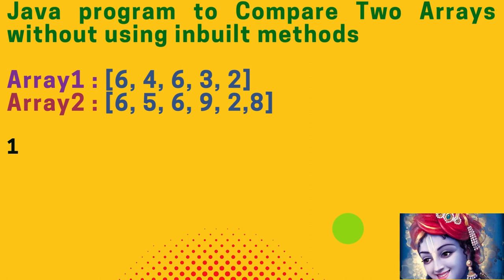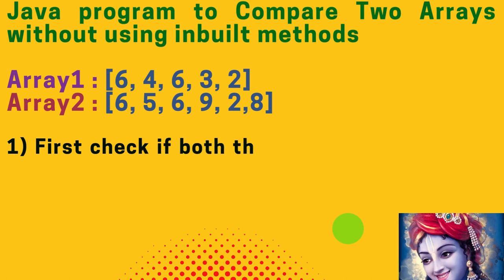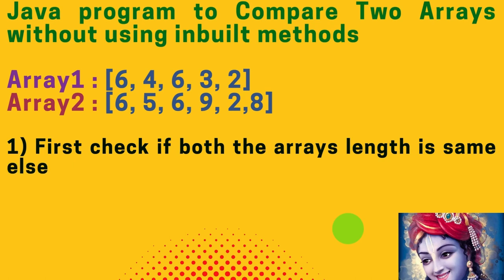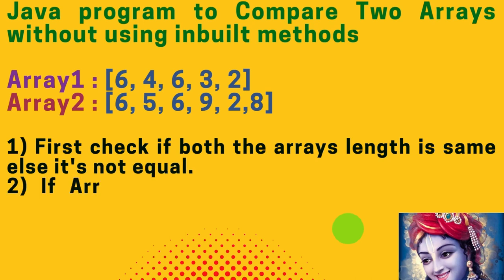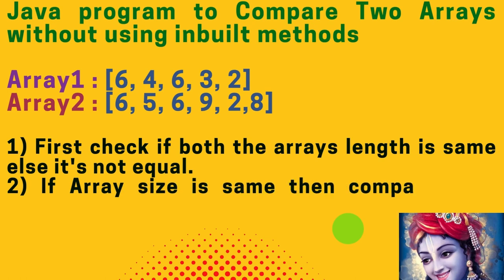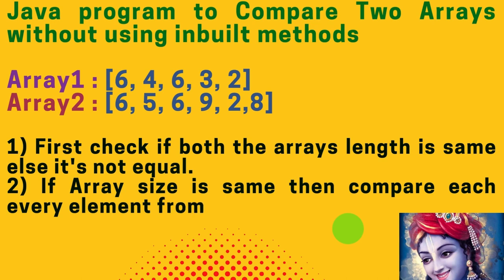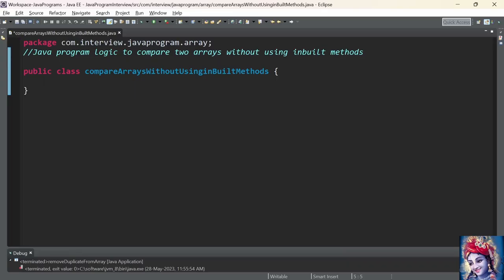Here is the logic we need to implement to find whether the elements of the arrays are equal or not. First, we need to check whether the length of both arrays are equal. If the length of array 1 and array 2 is not the same, there is no point proceeding further — we can directly return saying the arrays are not equal. The second step: if the array sizes are the same, then we compare each element one by one between array 1 and array 2. If they are matching, then only we print that both arrays are equal.